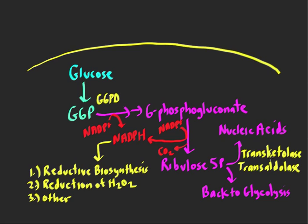These reactions are the non-oxidative reactions — they're all reversible, involving enzymes called transketolases and transaldolases. Glucose 6-phosphate dehydrogenase is the most important enzyme; it's the rate-limiting step that sets off this pathway and determines which direction it goes. The NADPH produced is involved in reductive biosynthesis like fatty acid and cholesterol synthesis, which is really very important in the liver.